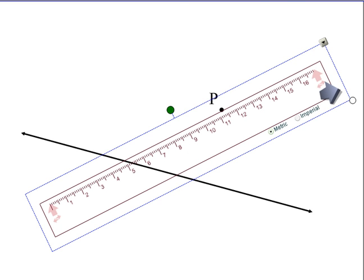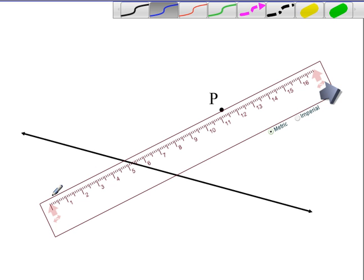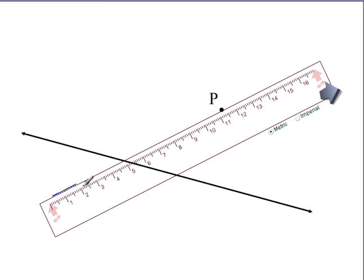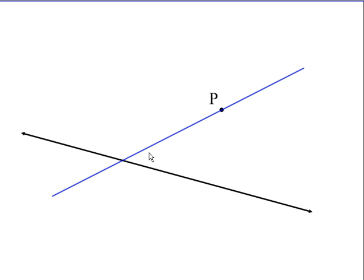So now let me go ahead and get my marking pen here. This is going to serve as my transversal. Now I'll get rid of the ruler. Now I'm going to take this angle right here and copy this angle right up here. And these angles will be in corresponding position. And if they're congruent it will force my line to be parallel.